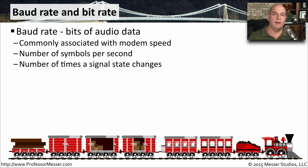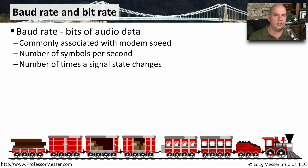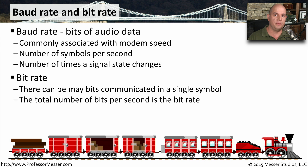When you start working with networks, you become very accustomed to talking about bits per second when referring to speeds or bandwidth. But if you work with modems, you'll also see a measurement standard called baud rate, which stands for bits of audio data. This is almost always seen with modems, and it refers to how many symbols you can move across the network at any particular time. The baud rate is the number of times the signal rate changes during a particular time frame. Because of the way signaling works over modem connections, a single symbol may represent a number of different bits — the number of bits traversing the link is the bit rate.